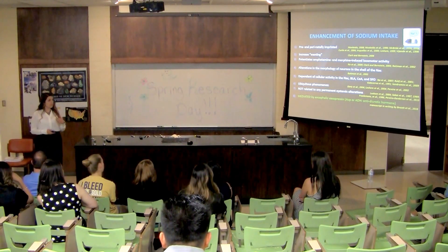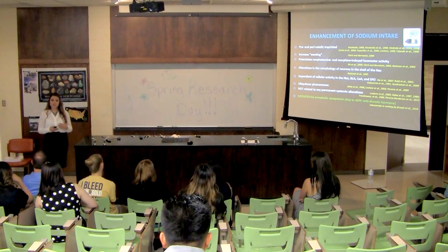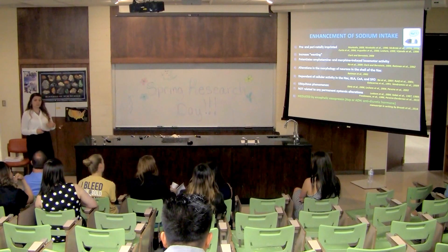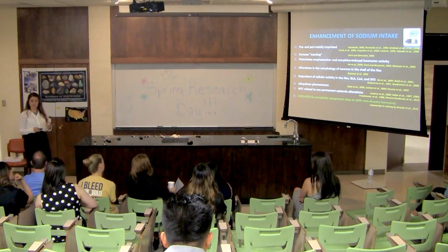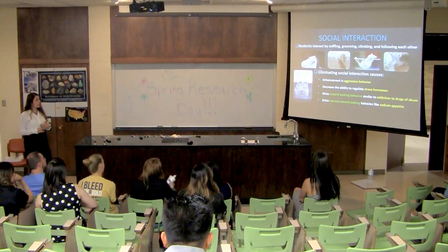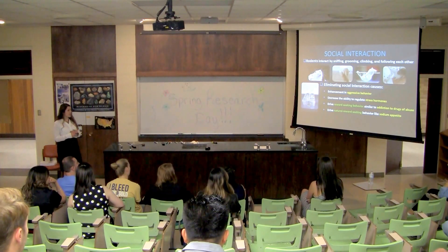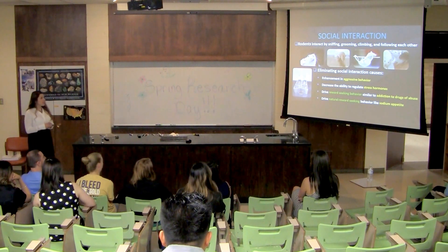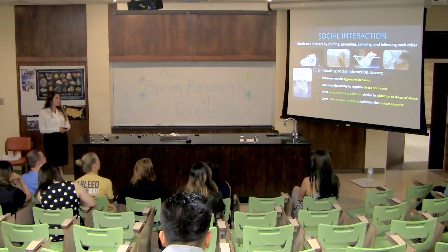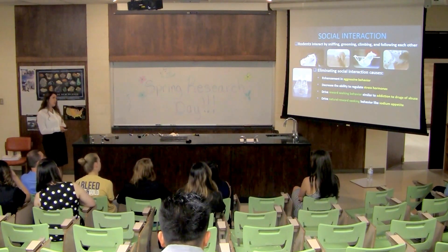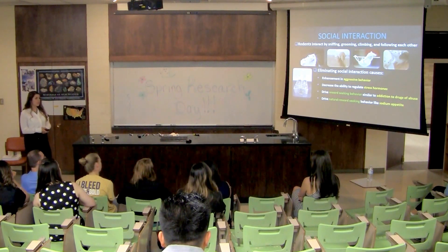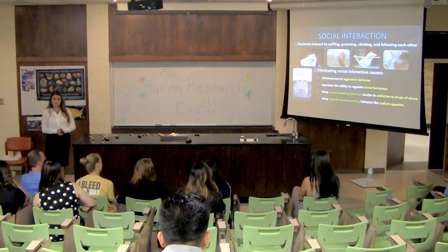Research conducted so far has only been done on rats that are individually housed, so I wanted to see how social interaction might affect that. Rodents interact by sniffing, grooming, and climbing and following each other around. By eliminating social interactions—by individually housing them—this can enhance aggressive behavior, decrease the ability to regulate stress hormones, drive reward behavior similar to addictions to drugs of abuse, and drive natural reward behavior like sodium appetite.